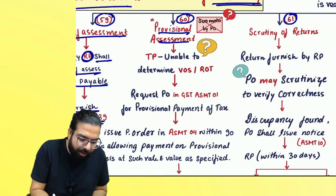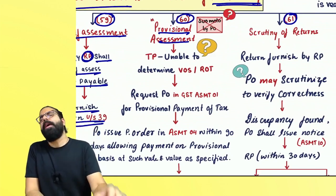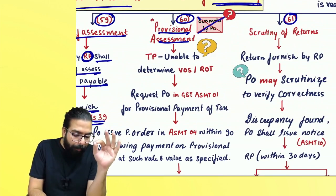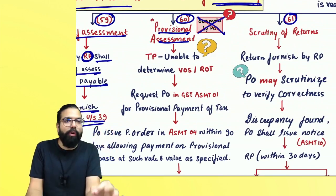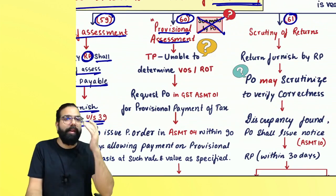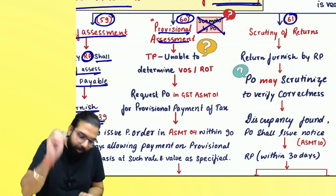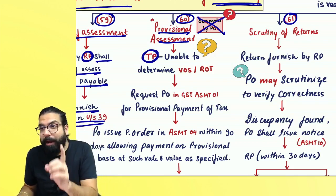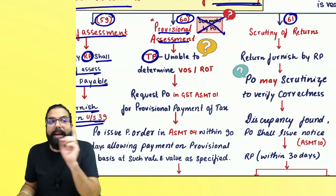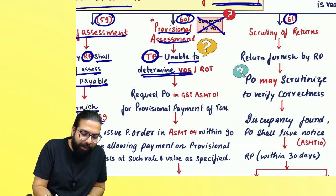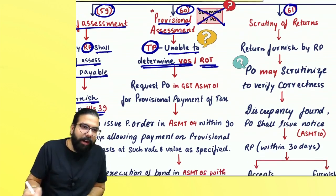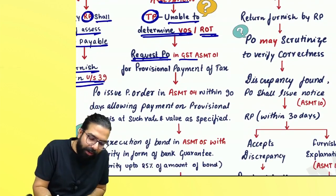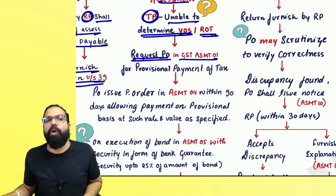The next is provisional assessment. Remember for your exam: proper officer cannot do provisional assessment suo motu — you only have to apply for it. Whenever a taxable person is unable to determine the value or unable to determine the rate of tax, you can request the proper officer in form ASMT-01.